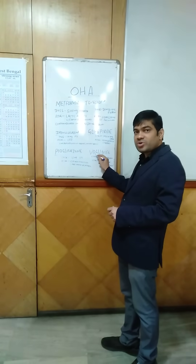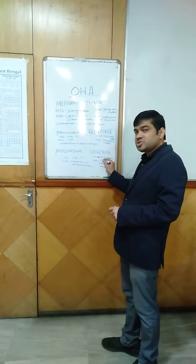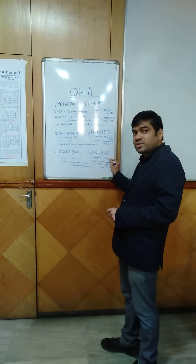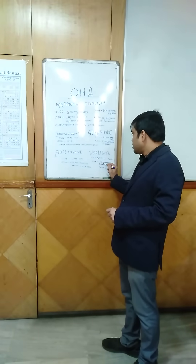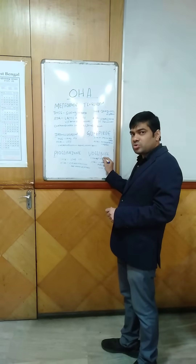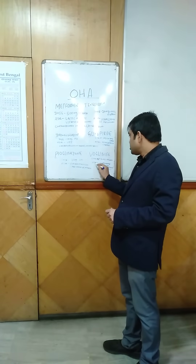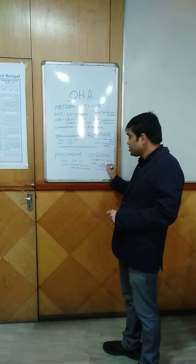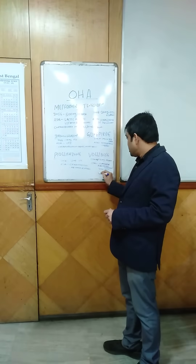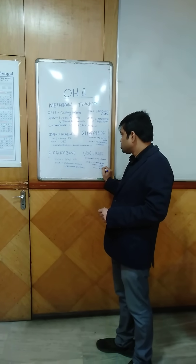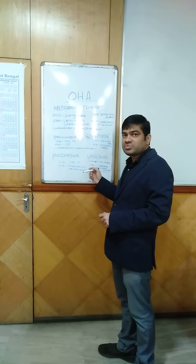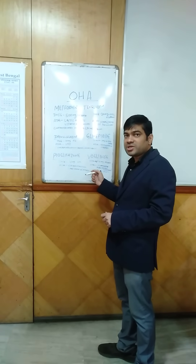Coming to the next drug, voglibose. The dose is 0.2 to 0.3mg OD, BD, or TDS, and it should be taken with food. The adverse reactions may be flatulence, abdominal discomfort, and loose stools.